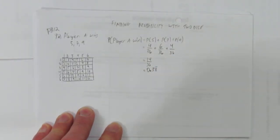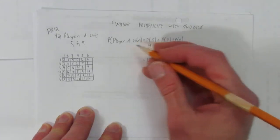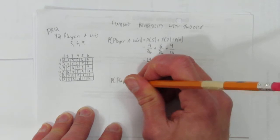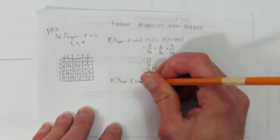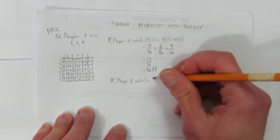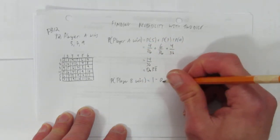It says, which player has the advantage? Well, if that's the probability player A wins, the probability player B wins is just, I mean it's obvious, you can see it. If that's the chance player A wins, player B's chance of winning is just 1 minus that.